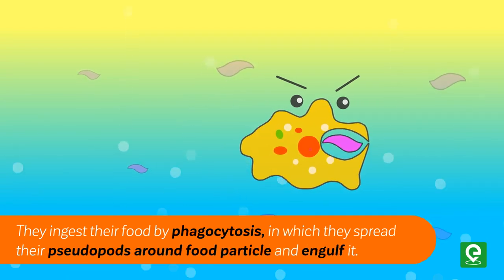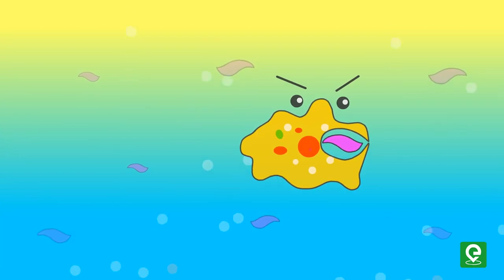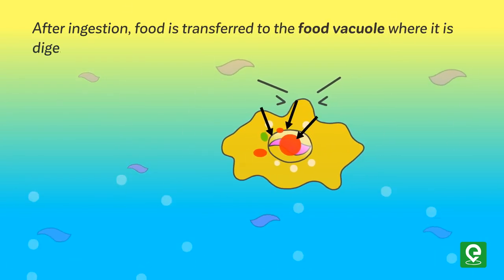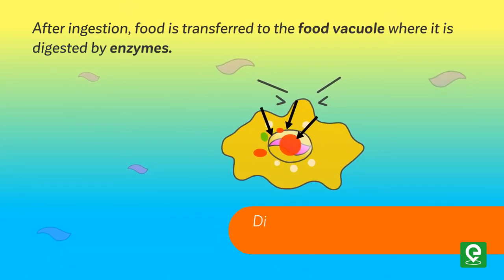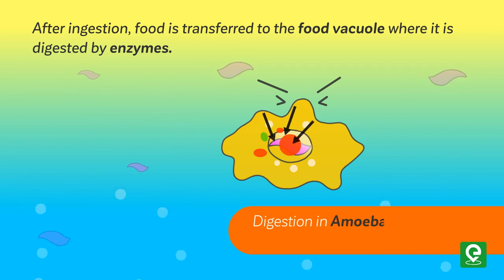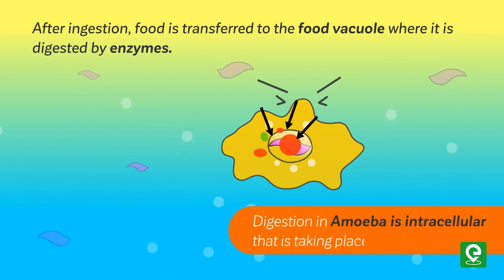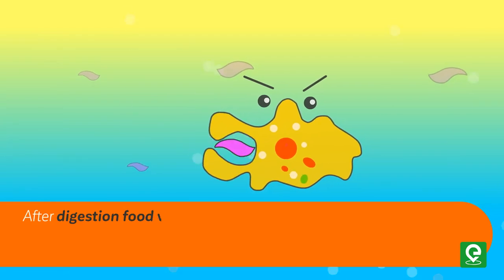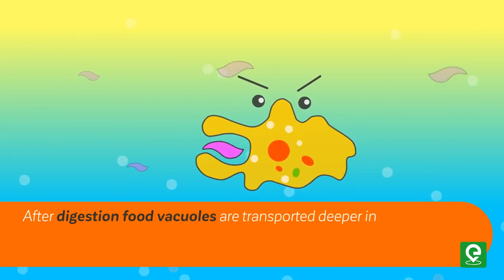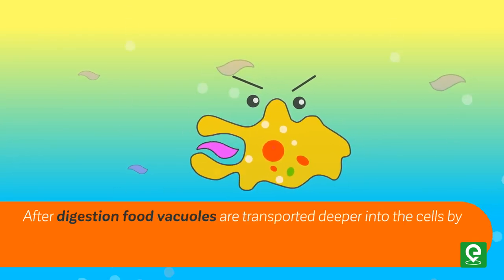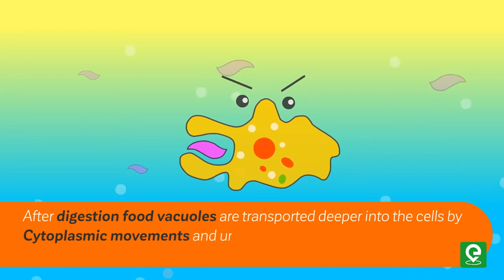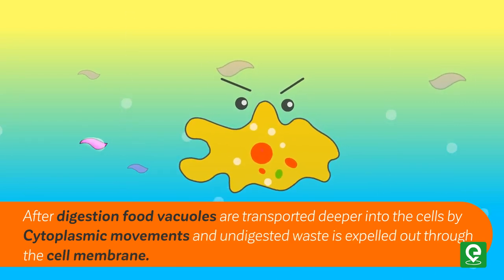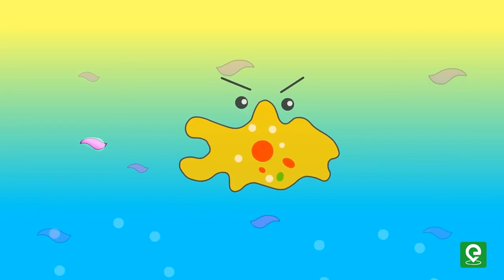After ingestion, food is transferred to the food vacuole where it is digested by enzymes. Digestion in amoeba is intracellular, that is, it takes place within the cell. After digestion, food vacuoles are transported deeper into the cell by cytoplasmic movements, and undigested waste is expelled out through the cell membrane.